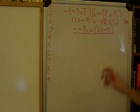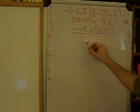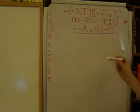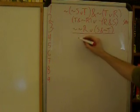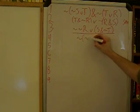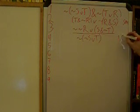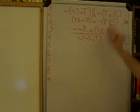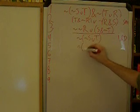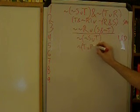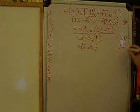So the first step we're going to do is we're going to go to line 1 and decompose our ampersand. We're going to get this term: negative, parenthesis, negative S or T. Line 1, ampersand decomposition. We're also going to get this on the next line: negative T or R. Line 1, ampersand decomposition.